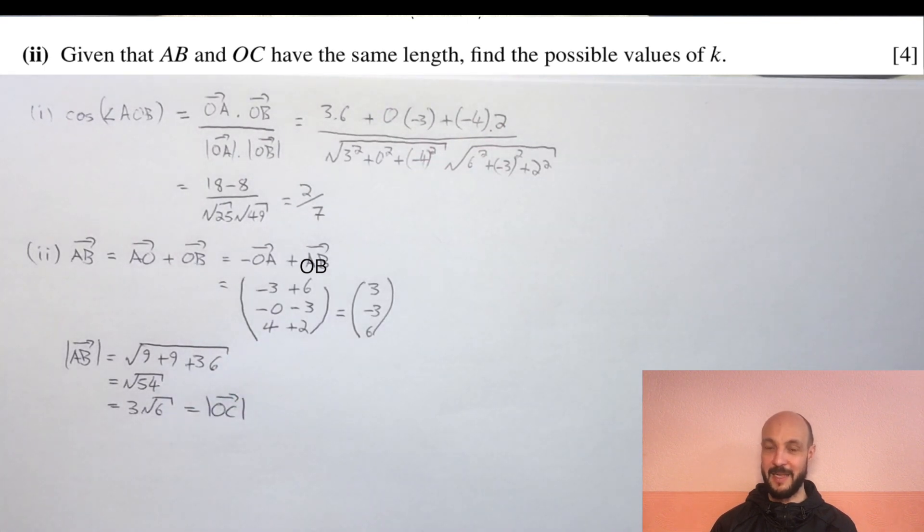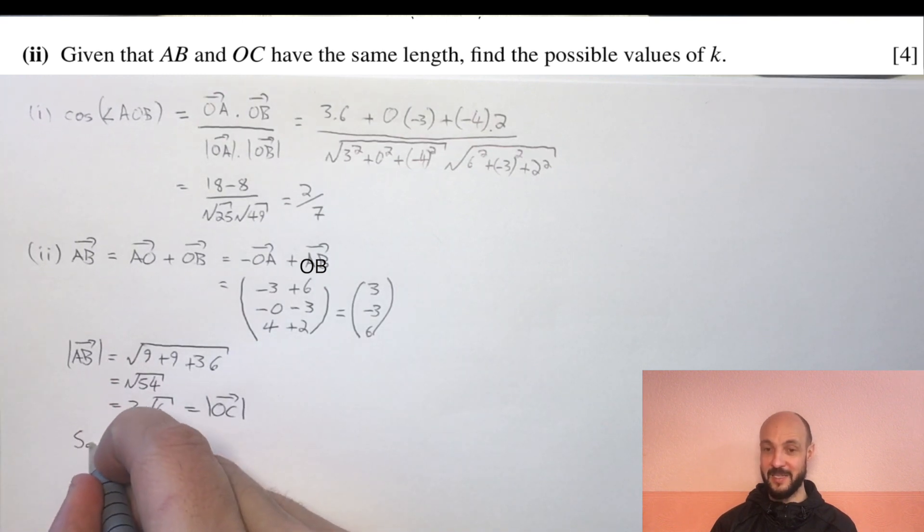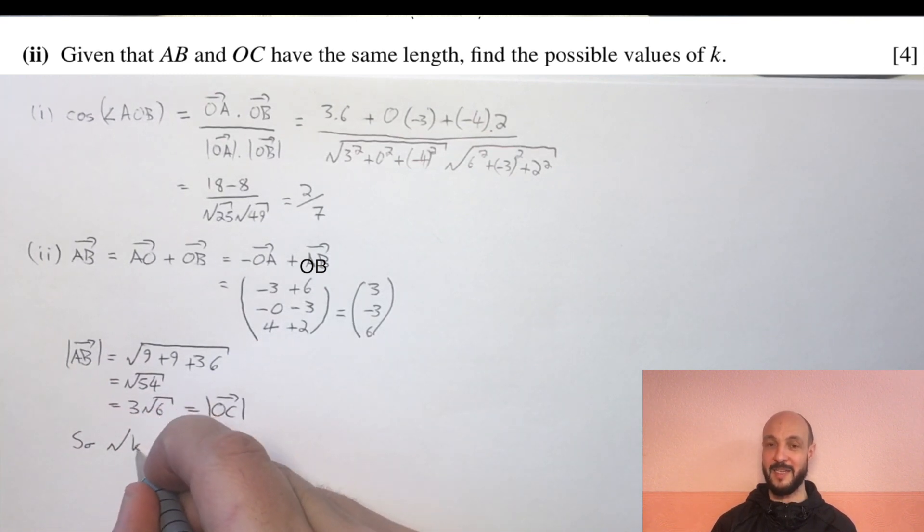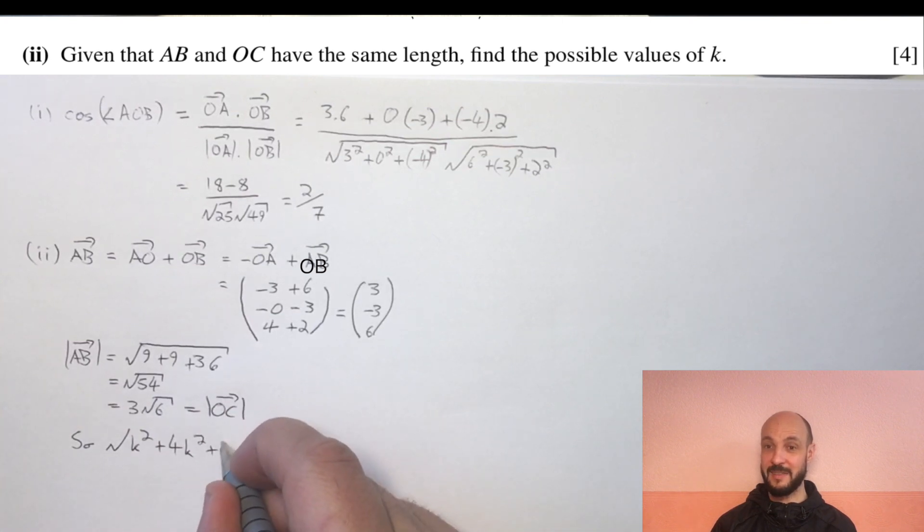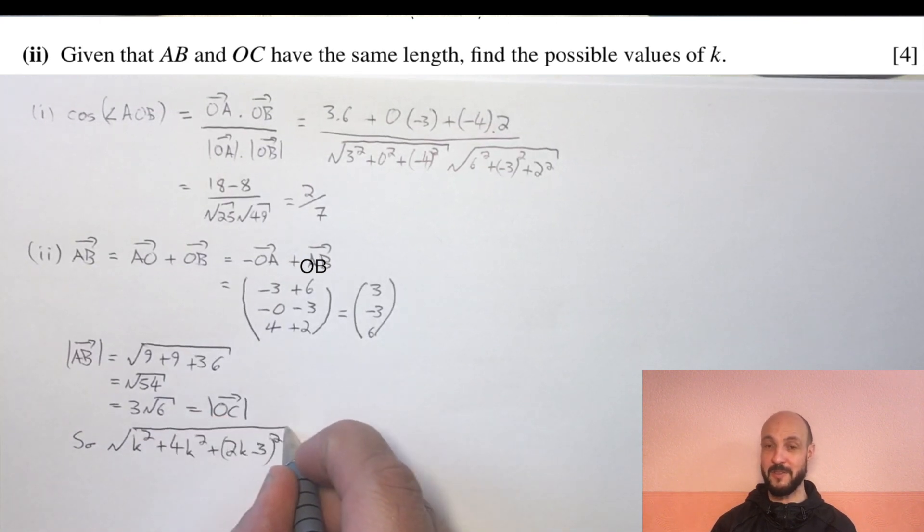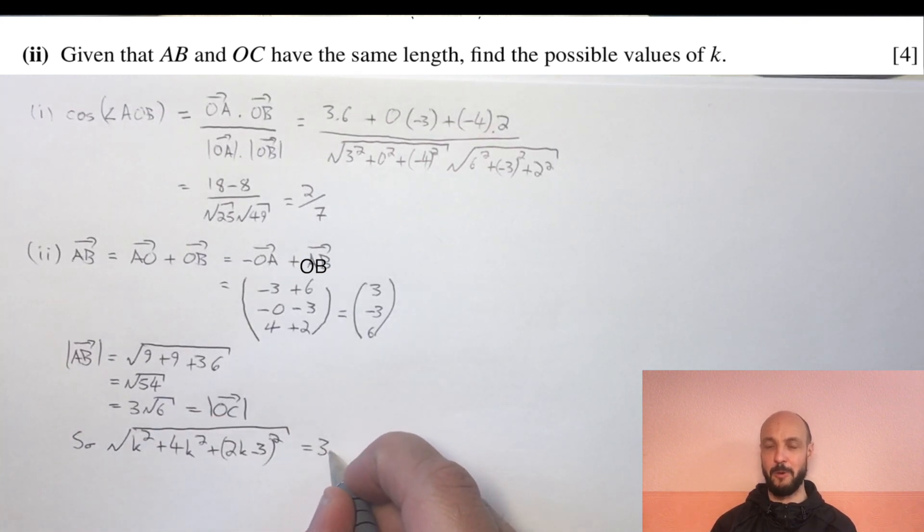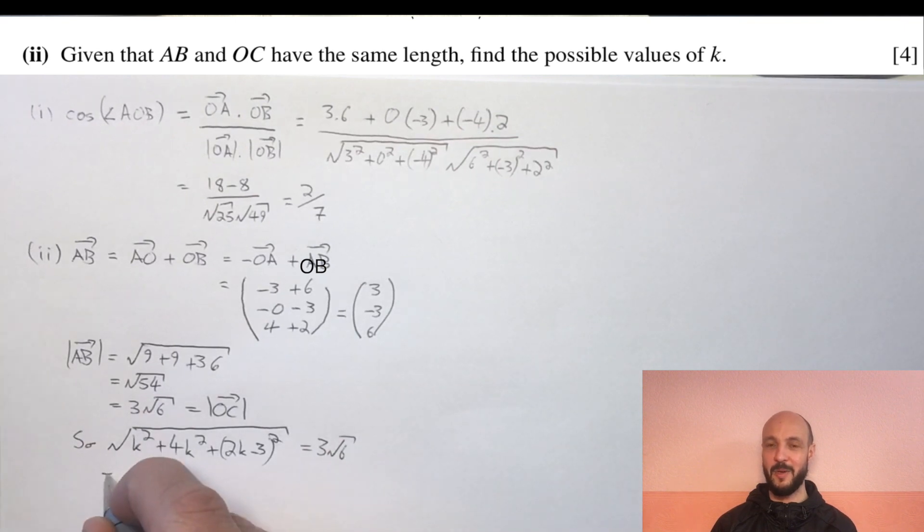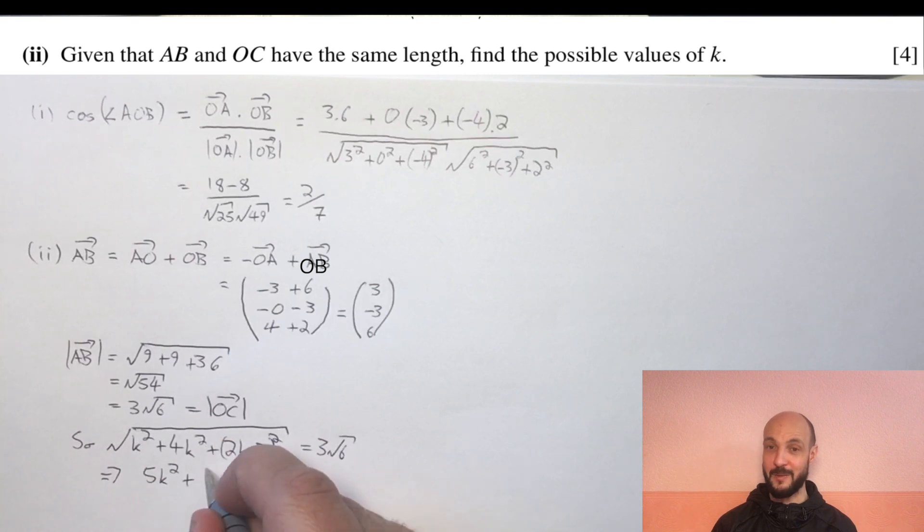If they have the same length, that tells us that OC has magnitude 3 root 6. Using Pythagoras formula on the components of OC, we've got K squared plus minus 2K squared which is 4K squared plus 2K minus 3 all squared equals 3 root 6. These are both positive so no problem with squaring both sides.